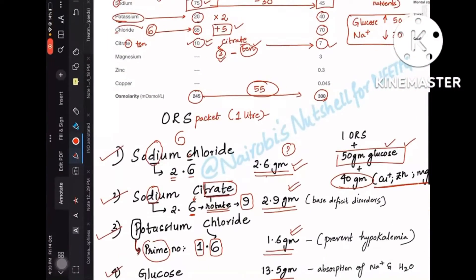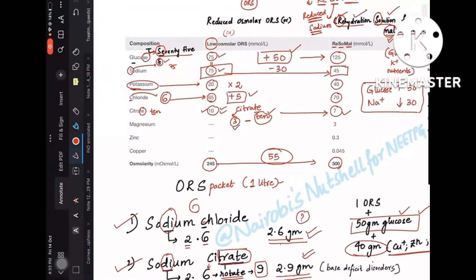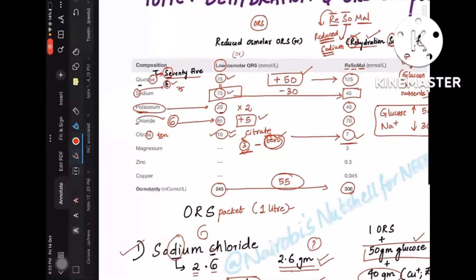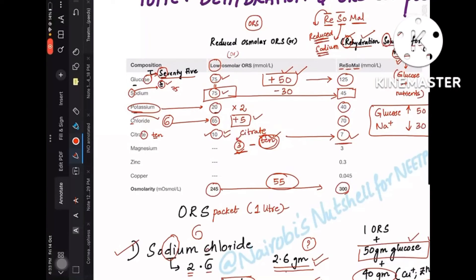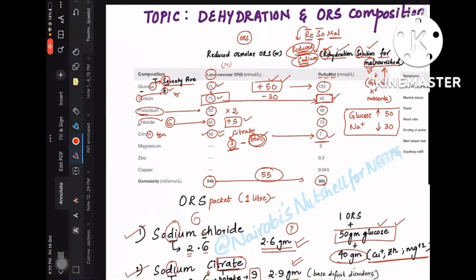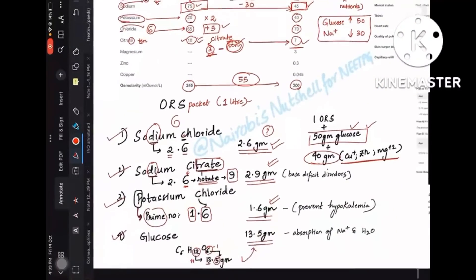2.6, 2.9, 1.6, 13.5 is easy, and citrate TEN, 10 is easy. From that you have to subtract minus 3, so that's 7. And you have to add 50 because you are giving extra glucose to the malnourished kids, and since the mnemonic has reduced sodium, you have to reduce the sodium—that is from 75 to 45 we are taking it. If you remember at least these values, you can rule out the options and come to the correct answer.